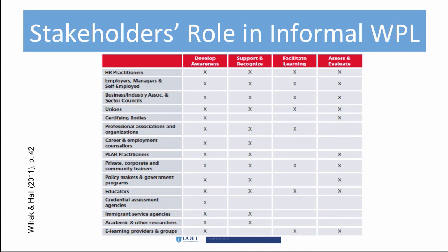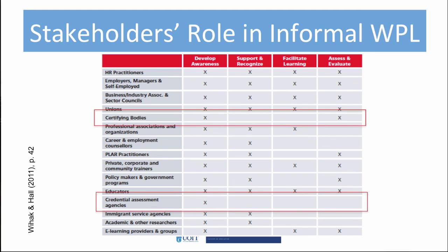This table provides you with a quick overview of some of the roles of stakeholders in informal learning in the workplace. As you can see, all have awareness of informal learning, but as you can see on the right side of the table, the participation by these stakeholders lessens. Now think back to when we examined formal learning. We found that credentialing was one of the main purposes of formal learning. Here we find that these agencies are aware of informal learning, but otherwise do not participate.